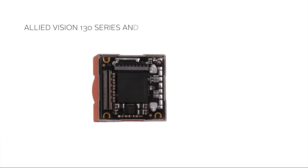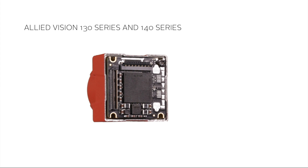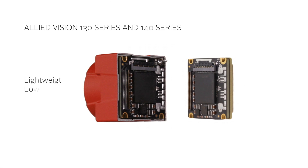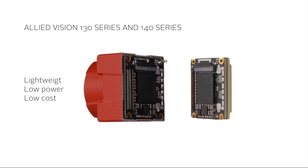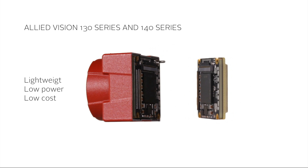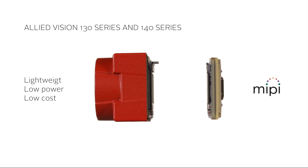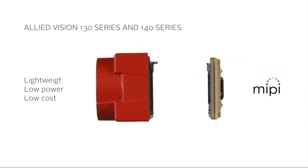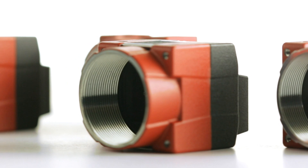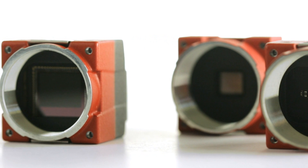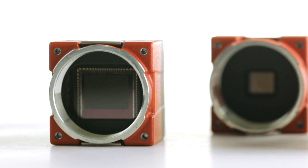With the 130 and 140 series, Allied Vision introduces complete lightweight, low-power-consuming, and low-cost camera modules with MIPI CSI2 interfaces. One camera driver supports all present and future sensors of the platform. We will keep enriching the Allied Vision One product line with more series and models in the future.